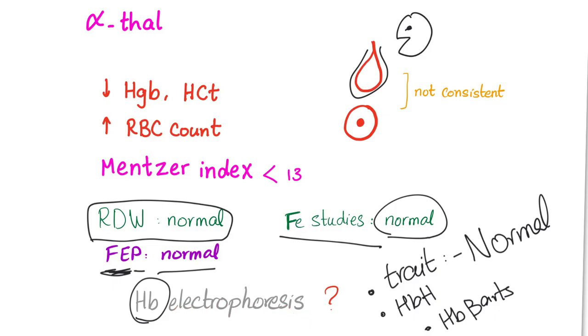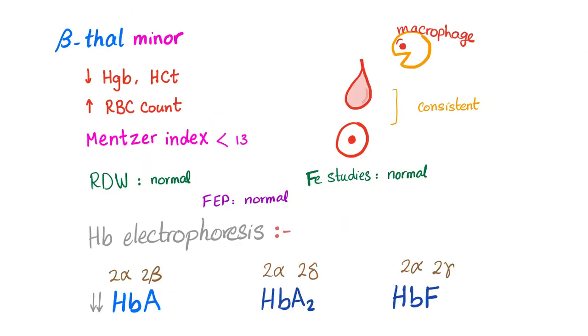Hemoglobin electrophoresis is normal because most cases are alpha thalassemia trait. How about beta thalassemia minor? Again, low hemoglobin and hematocrit because it's anemia. In thalassemia, RBC count is normal to high. Again, target cells and teardrop cells, but here they are consistent in beta thalassemia.